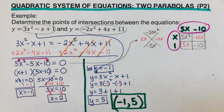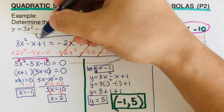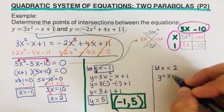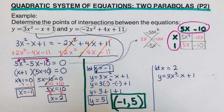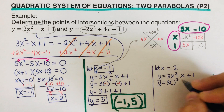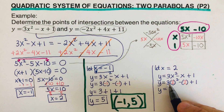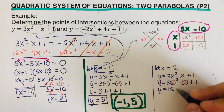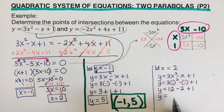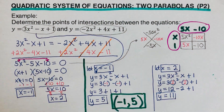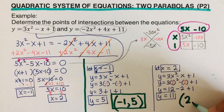To find the second point of intersection, we use the same equation with x equals 2. y equals 3 times (2) squared minus (2) plus 1. 2 squared is 4, times 3 is 12, then 12 minus 2 plus 1 equals 11. So y equals 11, and the second point of intersection is (2, 11).